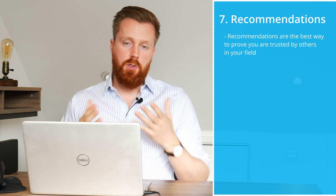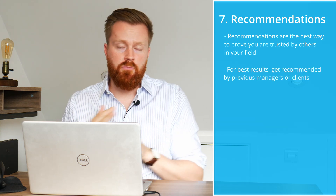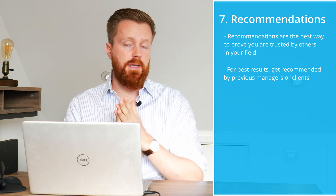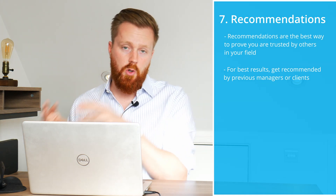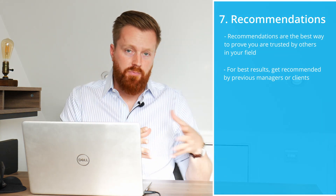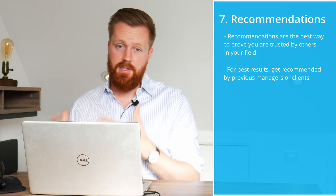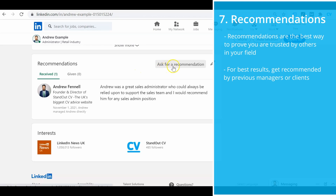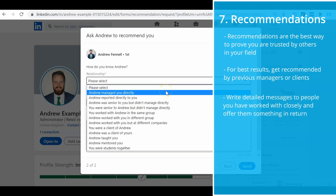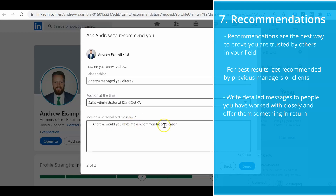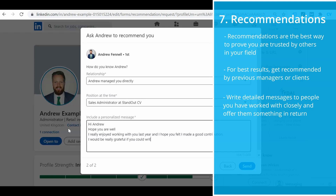The best people to get recommendations from are people that you've worked under in the past — a previous boss, a previous client, or even perhaps a teacher or lecturer. For example, if you're a marketer applying for positions with a marketing manager, and you have a recommendation from a previous marketing manager on your profile, that's going to resonate really well because it's quite literally one of their peers saying this person worked for me, they did a really good job, and I'm sure they'll do a good job for you as well. To get recommendations you have to ask for them by going to the recommendation section and clicking there.